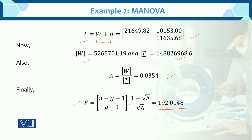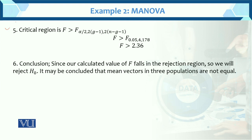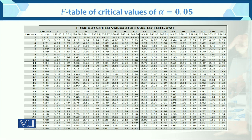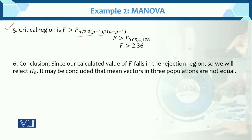The calculated F value is 192.0148. The fifth step is the critical region. The calculated F value is greater than the critical value F with degrees of freedom 4 and 178 at alpha = 0.05 (since we use alpha/2 for 10% level). Since the table value for df = 178 is not available, we check at infinity or interpolate — the critical value is approximately 2.36.